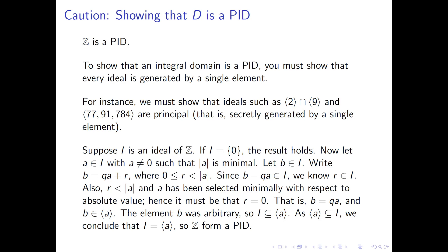If you'd like to know the answer to the question I gave earlier — the ideal generated by 77, 91, and 784 — notice that 7 is the greatest common divisor of those three numbers. So if I were picking a non-zero element of that ideal with minimal absolute value, I could pick the number 7. Secretly, the ideal generated by 77, 91, and 784 is the ideal generated by 7.